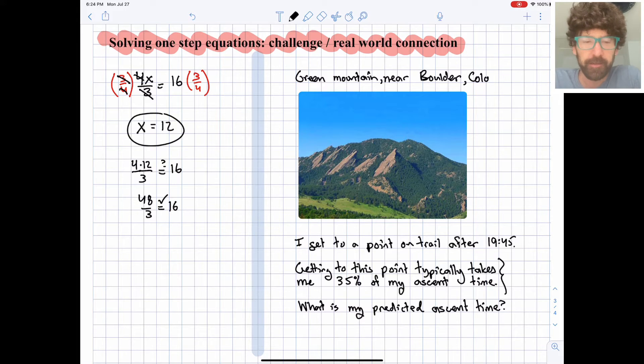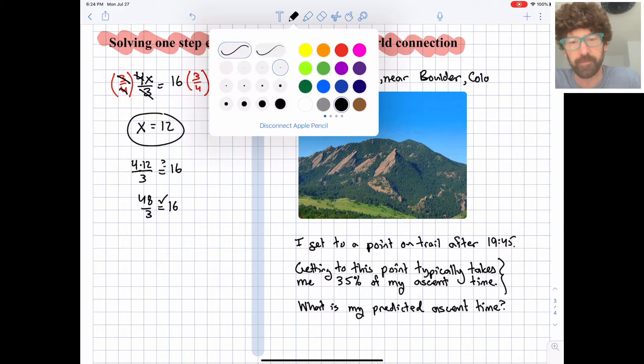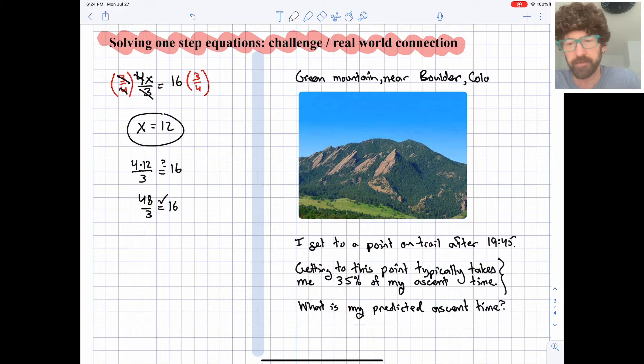Alright, then let's take a look at this real world connection here, and this is a completely true problem with accurate numbers, and it's a true scenario that I've encountered recently. So this involves one of my favorite mountains in the world called Green Mountain. It's just outside of Boulder. And it's famous for the flat irons being on the east face of this mountain. These flat irons have numbers.